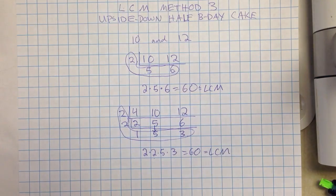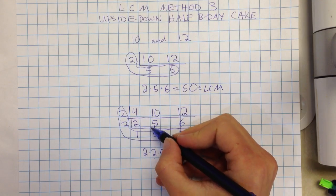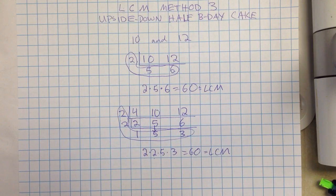You can have an LCM that works for both two numbers and three numbers. This is the trick for if you're doing it with three numbers. You keep factoring if you can do at least two of them.